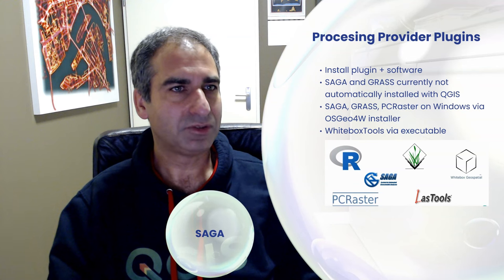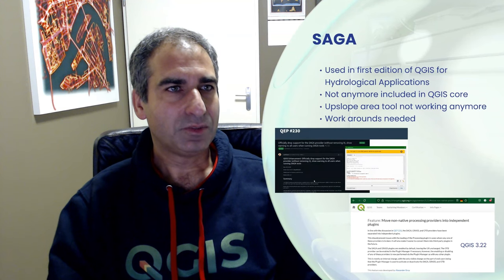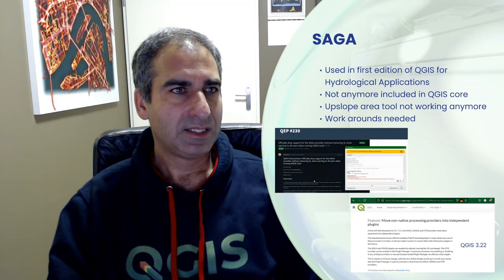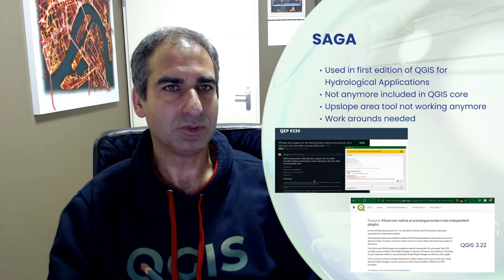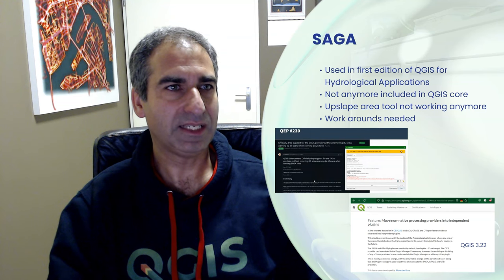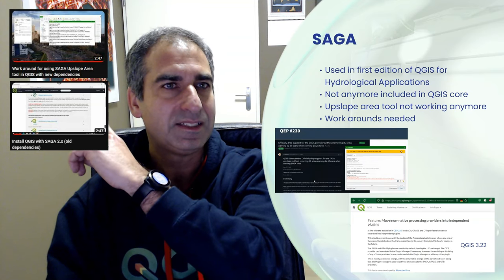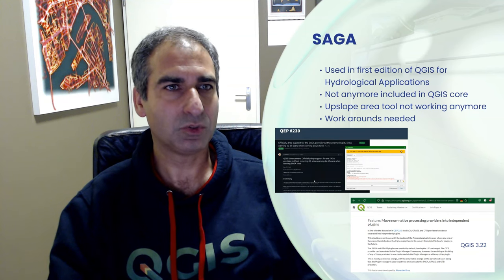Whitebox Tools is available through installers on their website. In the first edition of the book QGIS for Hydrological Applications, which I wrote together with Kurt Benke, we used Saga for the stream and catchment delineation workflow. Since Saga is no longer included in QGIS, there are also issues now with the upslope area tool needed for the catchment delineation procedure. If you still want to use Saga tools in QGIS, you need some workarounds — check this playlist. In the second edition, we therefore switched to the PCRaster tools plugin, which provides a robust tool for this workflow.